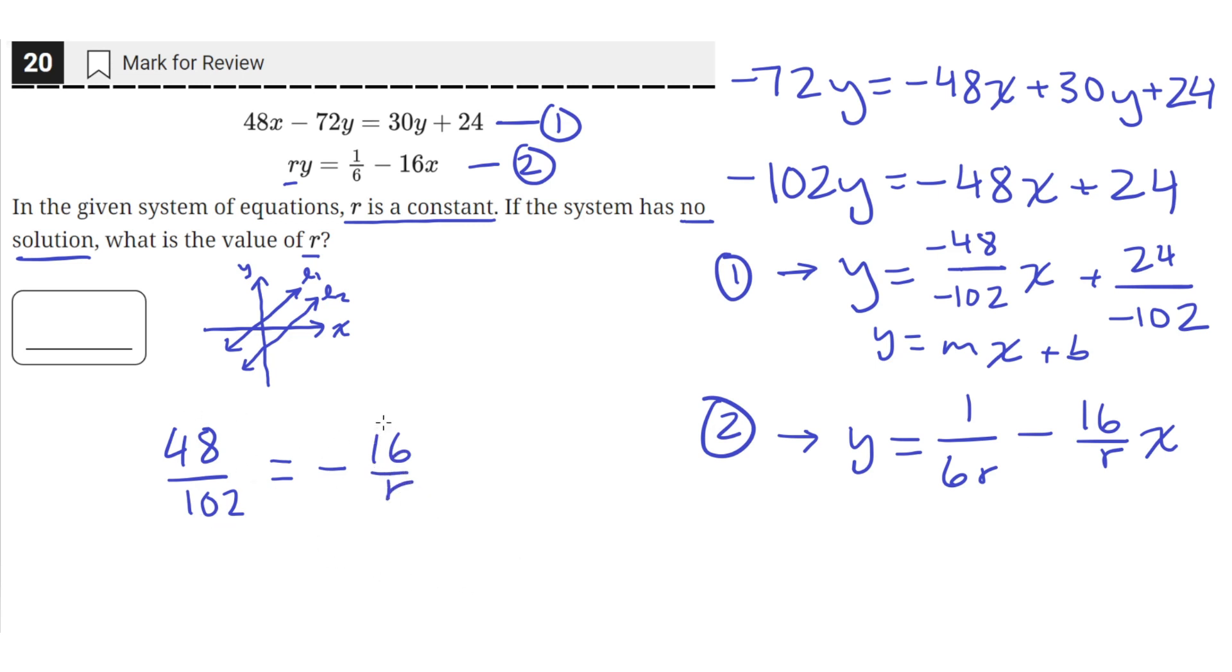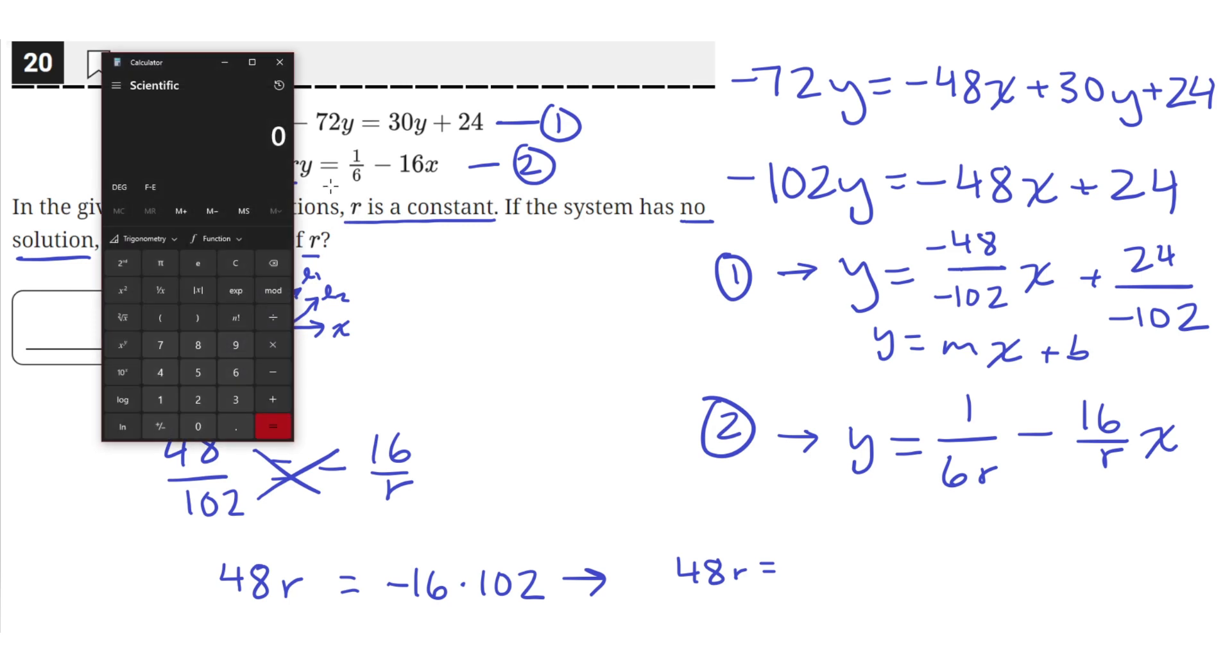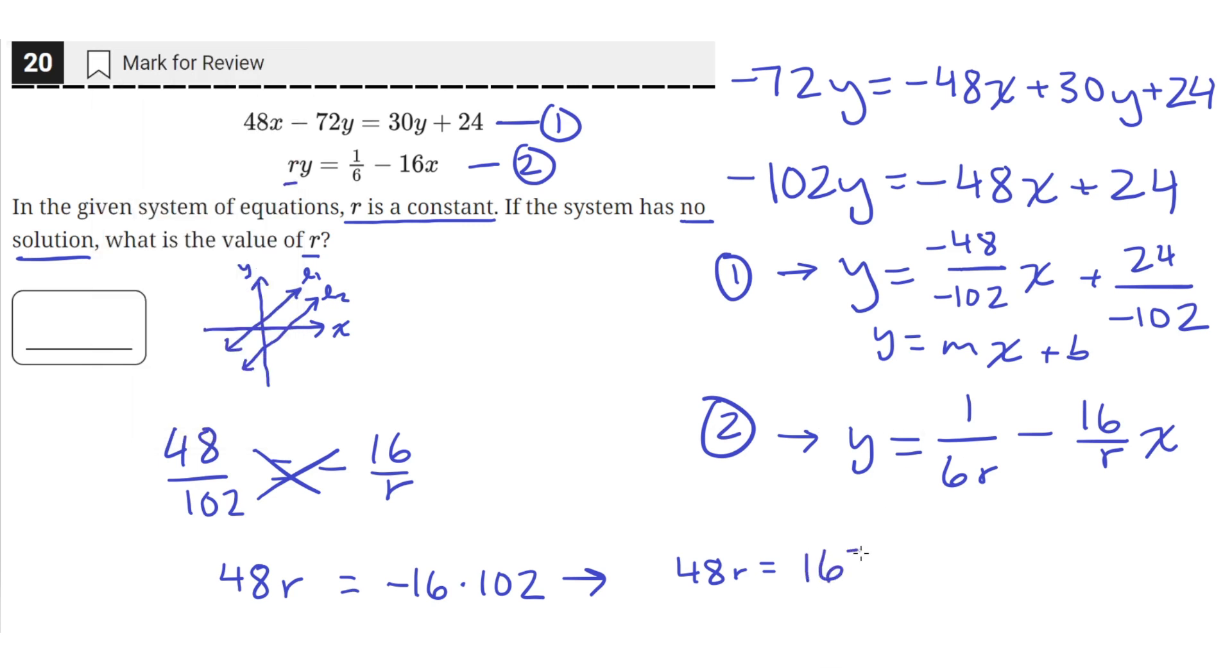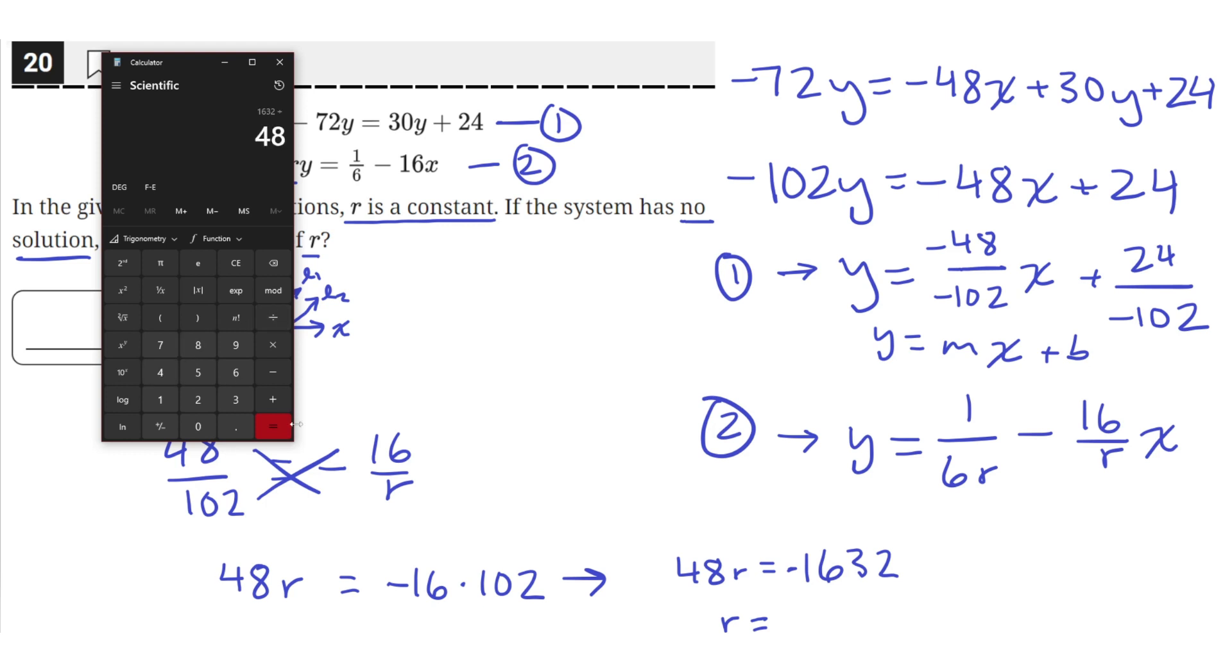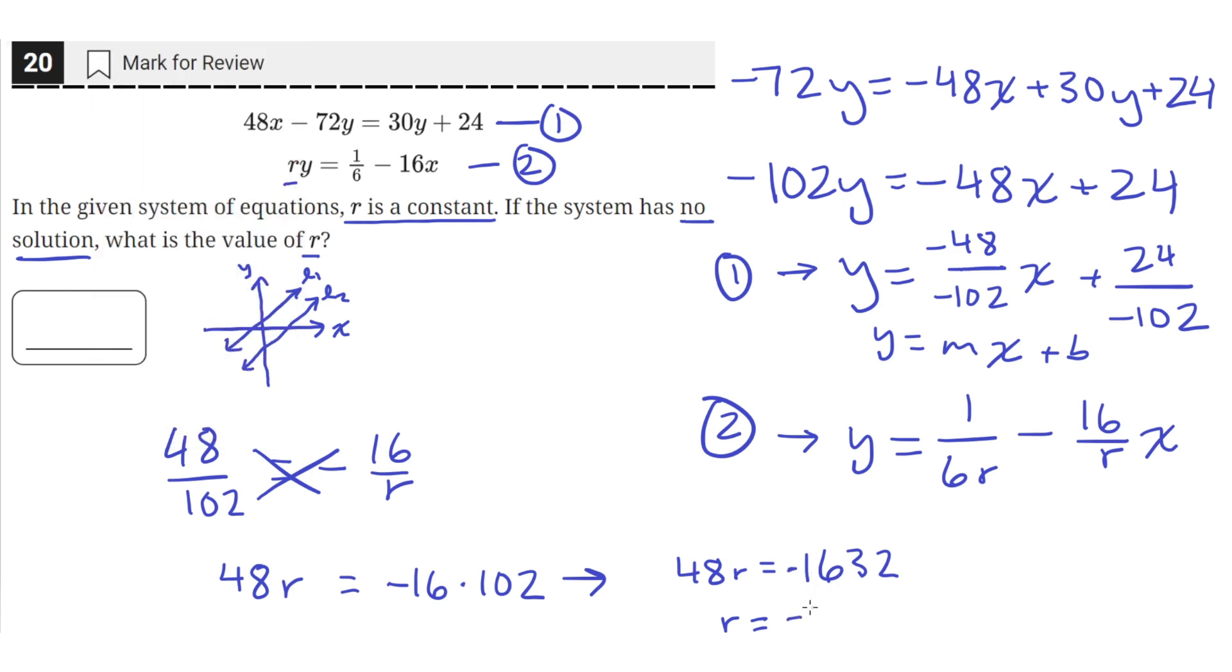So now we can just solve for the value of r. We can cross multiply, so multiplying the corners. So 48r equals negative 16 times 102. So that means 48r equals, if we get out our calculator, 16 times 102 is 1632. And this will be negative since the 16 was negative. And then we can divide both sides by 48 to find the value of r. So 1632 divided by 48 equals 34. And this will be negative since the 1632 was negative, so negative 34.